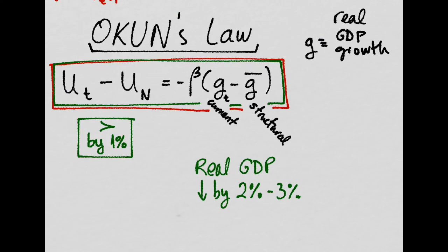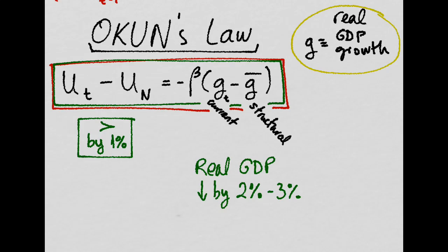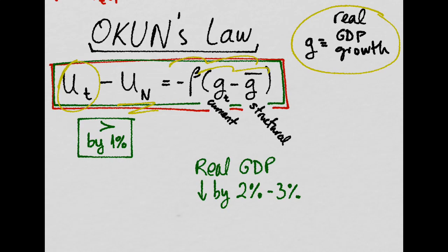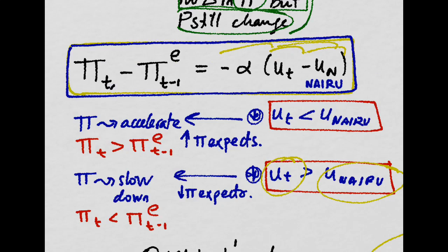Another important equation is Okun's law. We define G as the real GDP growth rate. If we have currently an unemployment rate 1% higher than the NAIRU, this is positive, and this is negative, which means that actually your real GDP is going down, probably by 2% or 3%.